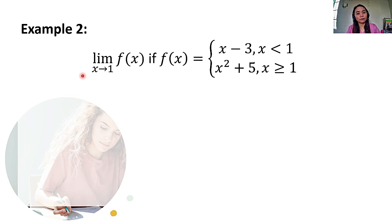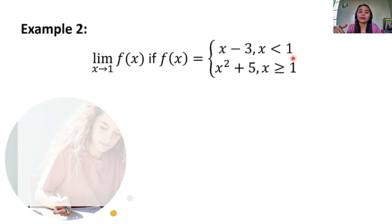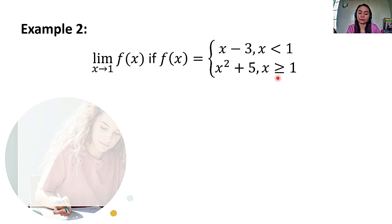So, let's proceed to the second example. Evaluate the limit of f of x as x approaches 1 if f of x is equal to x minus 3, if x is less than 1, and x squared plus 5 if x is greater than or equal to 1. So, what we have here is a piecewise function, and it's important that we consider the conditions provided in dealing with piecewise functions.